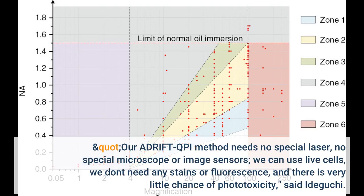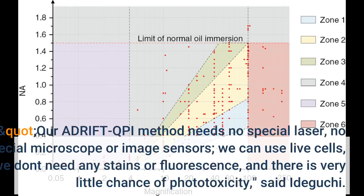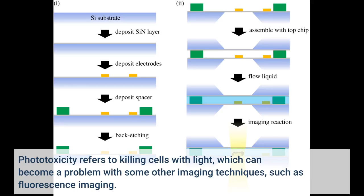Our Adrift QPI method needs no special laser, no special microscope or image sensors. We can use live cells, we don't need any stains or fluorescence, and there is very little chance of phototoxicity, said Idiguchi. Phototoxicity refers to killing cells with light, which can become a problem with some other imaging techniques such as fluorescence imaging.